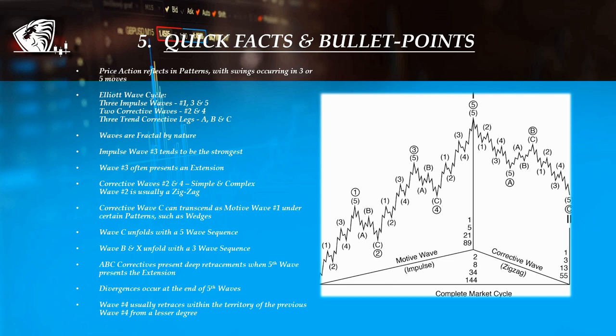ABC correctives can provide a strong gain, depending on the size of the impulse waves. This is because, at the end of the fifth wave, divergences occur giving traders the possibility to spot a difference in the price action.